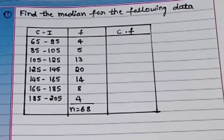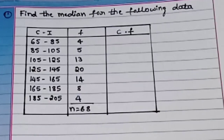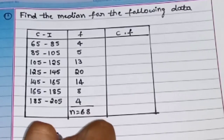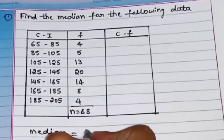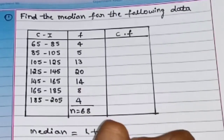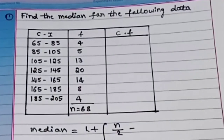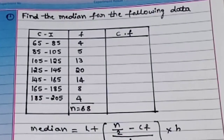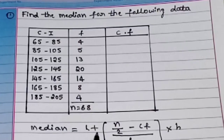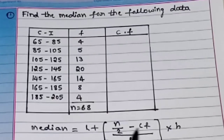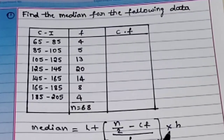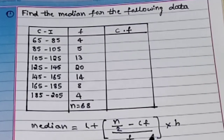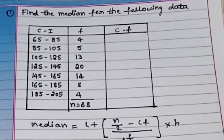Now how do we find the median? First I will write the formula. The formula is: median equals L plus, open bracket, n by 2 minus cf, close bracket, divided by f, multiplied by h.